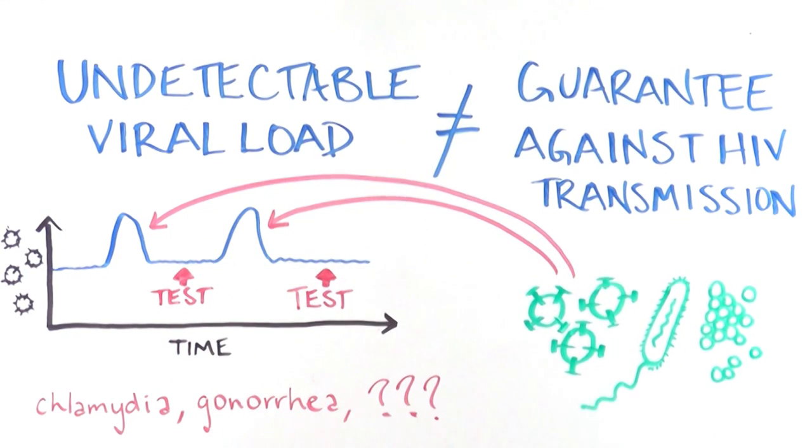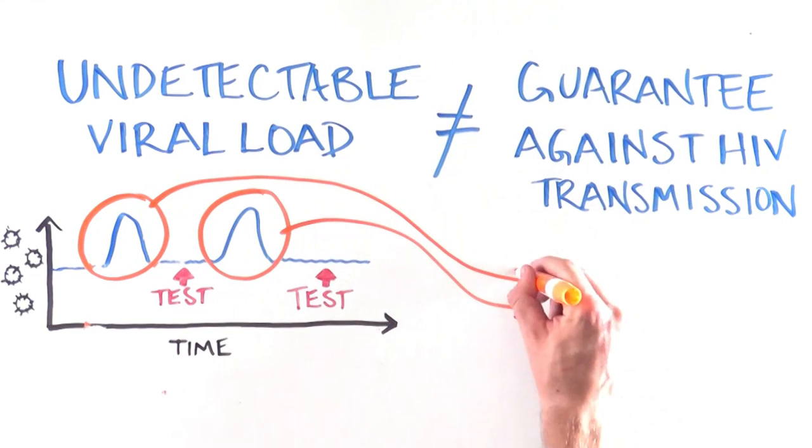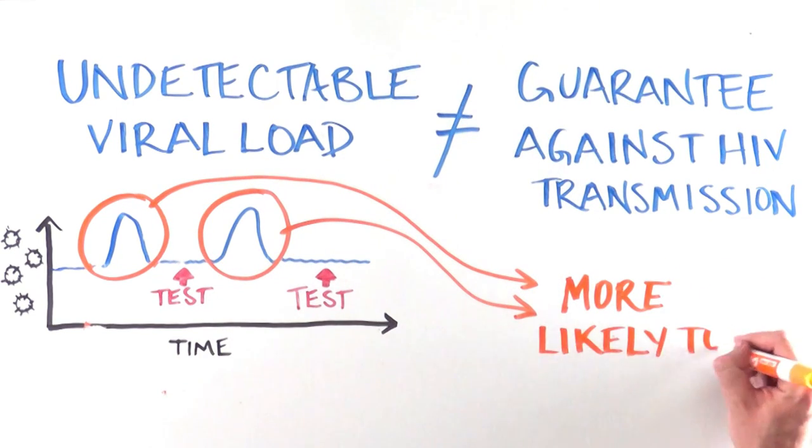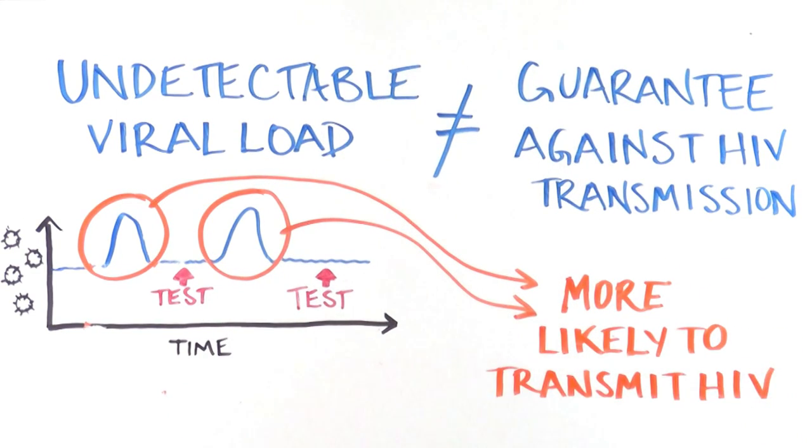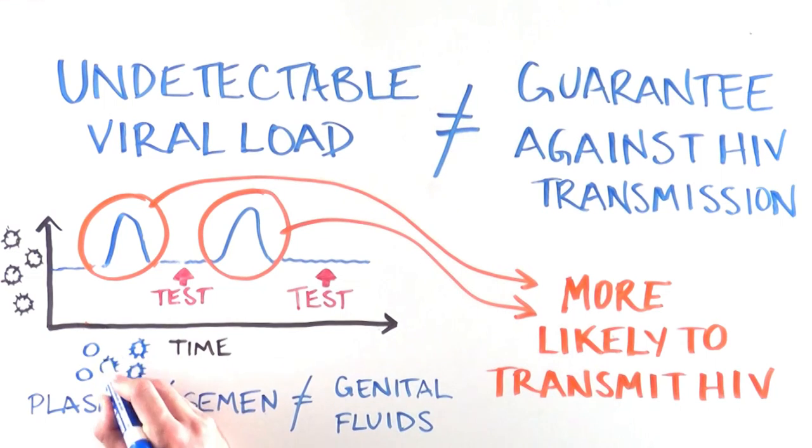During those times when there is more HIV virus present, the individual may be more likely to transmit the virus, even though they had undetectable viral load at their last medical checkup. It's also important to know that viral load is not always consistent between an individual's plasma, semen, and other genital fluids, and could potentially be higher or lower than the levels measured in the plasma.